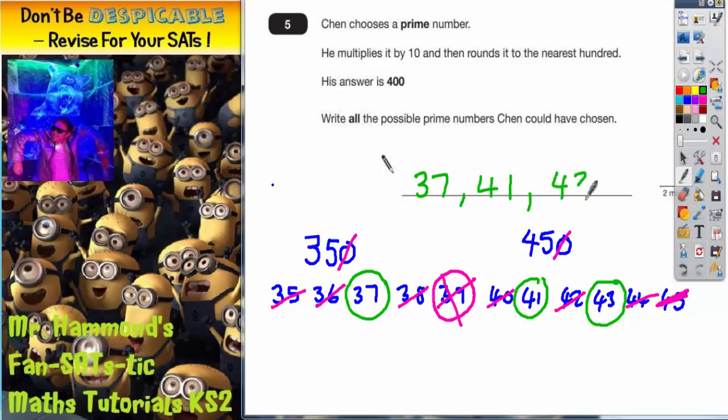And if we double check that, 37 times 10 is 370, so that does round to 400. 41 times 10 is 410, that also rounds to 400. 43 times 10 is 430, that also rounds to 400. So we've got all our answers here.